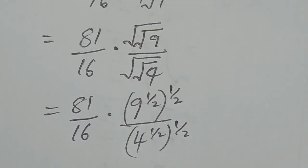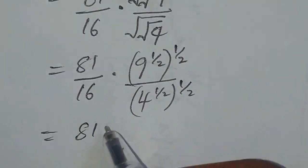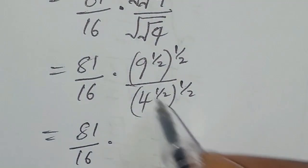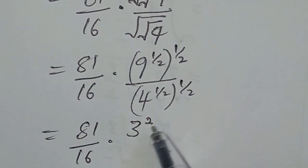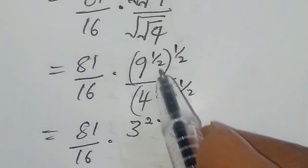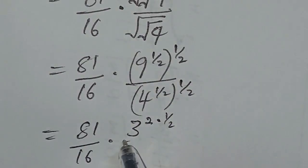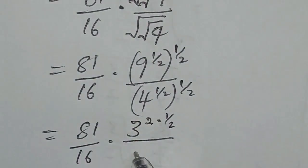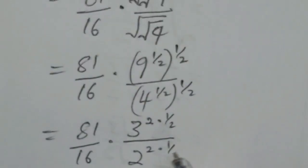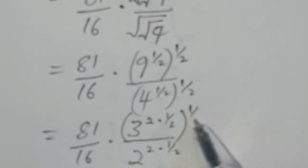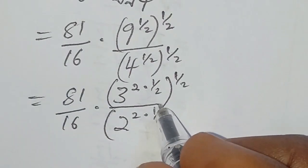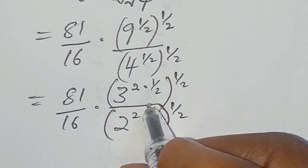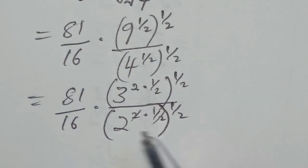We can simplify by writing 9 as 3 squared and 4 as 2 squared. So we have 81 over 16 multiplied by 3 squared times one half, all to the power of one half, over 2 squared times one half, all to the power of one half. The squared and the one half cancel each other.